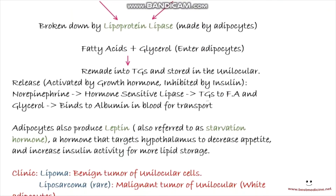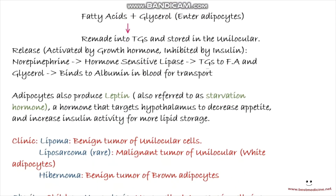Adipocytes can also produce leptin, referred to as a starvation hormone. Leptin is produced by adipose tissue, travels to the appetite and satiety centers in the hypothalamus, and decreases appetite. It also increases insulin activity for more lipid storage and targets the hypothalamus to suppress appetite.